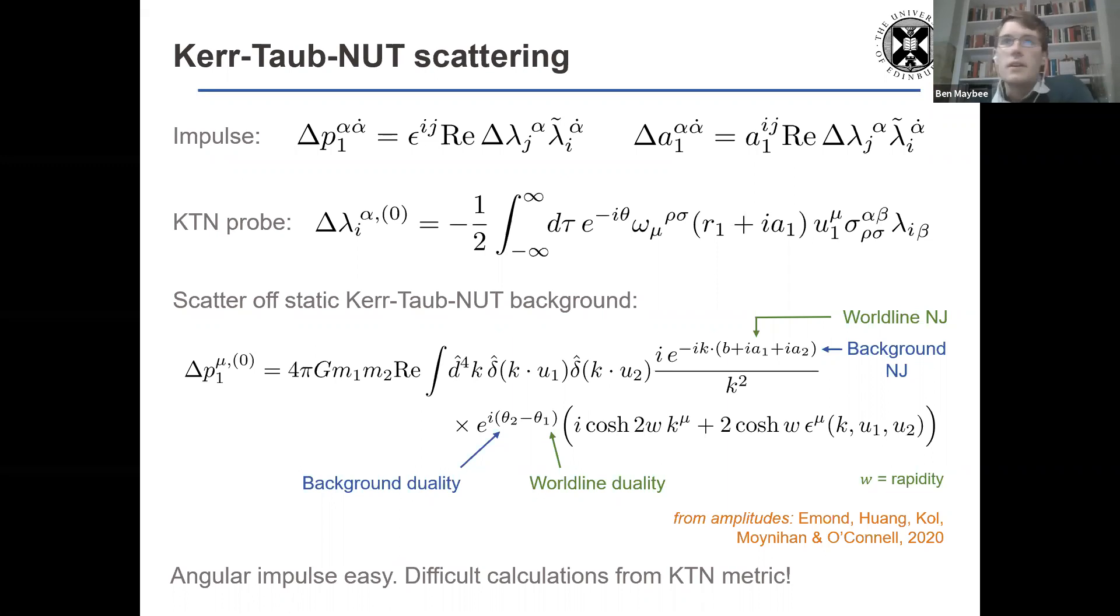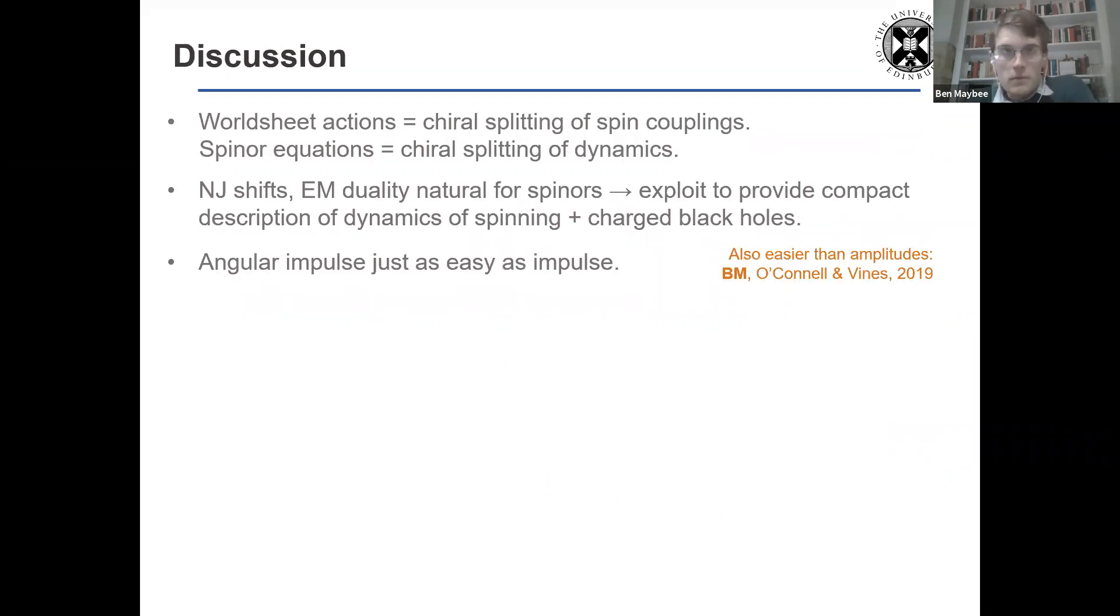So that was all I was going to tell you about. So just to finish up, in Donal's talk, we showed that, he showed that the worldsheet actions really correspond to a chiral splitting of the couplings of spin multipoles. The spinor equations take this, exploit it, and turn this into a chiral splitting of the dynamics for a scattering particle.